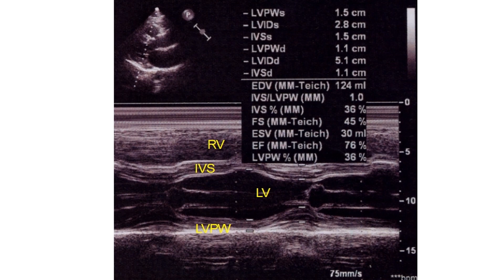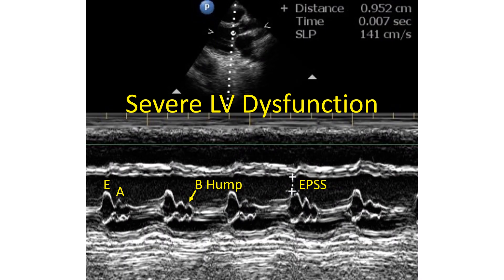Ejection fraction is the ratio of stroke volume to end diastolic volume expressed as a percentage. LVPW % – systolic thickening of the left ventricular posterior wall can be reduced in scarring due to myocardial infarction. Here we see the measurement of E-point septal separation or EPSS in severe left ventricular dysfunction. Normally it is less than 5 mm; here it is almost 10 mm. B hump is also seen in the M-mode of the mitral valve indicating high left ventricular end diastolic pressure.